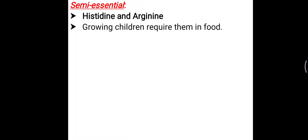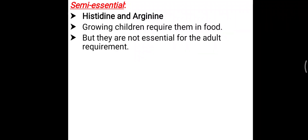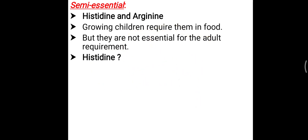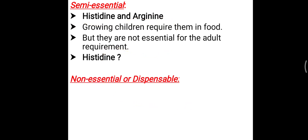Histidine and arginine are the semi-essential amino acids. Growing children require them in their diet, but they are not essential for adults to maintain normal health. Out of these two, if an MCQ gives both as options and asks for one, prefer arginine over histidine, because histidine does not significantly affect nitrogen balance. Therefore, arginine is considered more semi-essential than histidine.